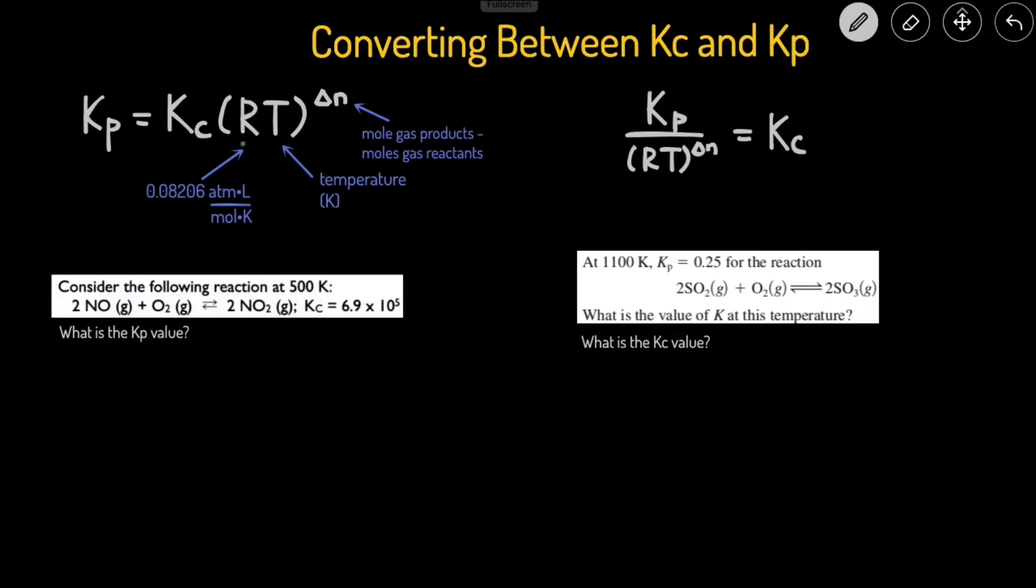Kp equals Kc times R gas constant 0.08206 times the temperature in degrees Kelvin raised to the power of delta N, which is the change in moles of gas. You can figure that out by taking the moles of gas on the product side and subtracting the moles of gas on the reactant side. Let's try this problem.